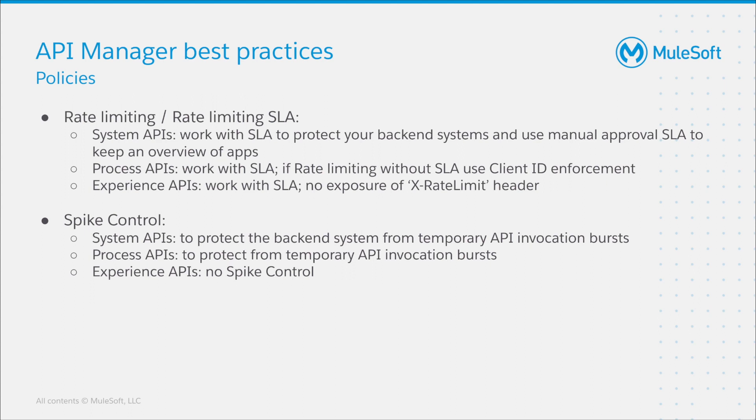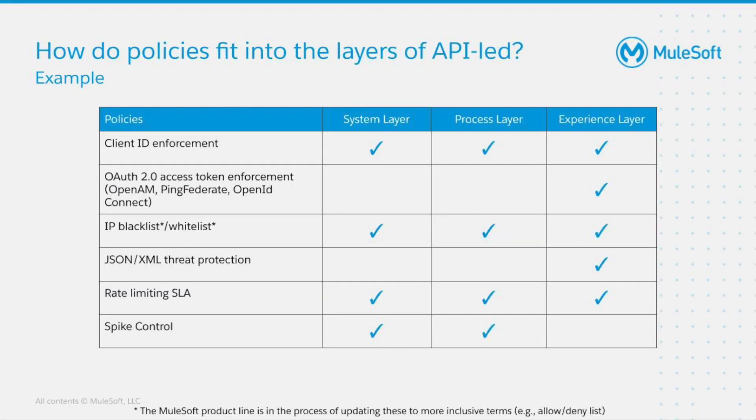Experience APIs should only be protected with an SLA-based approach, and you might also consider protecting the rate limit header from being exposed. The spike control policy should only be used for system APIs and process APIs, as it is designed to protect backend systems from temporary API invocation bursts. For experience APIs, the use of spike control is not recommended as it can lead to a bad user experience.